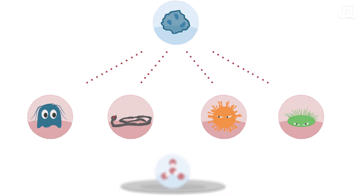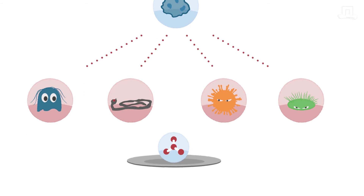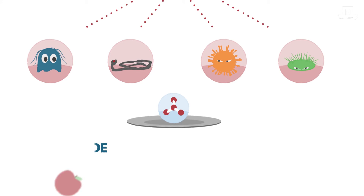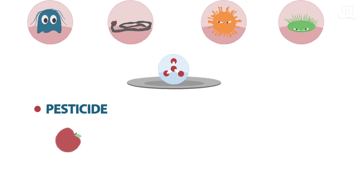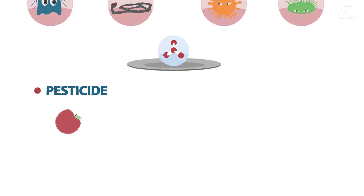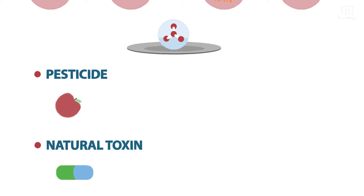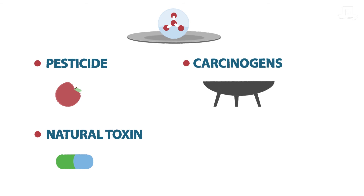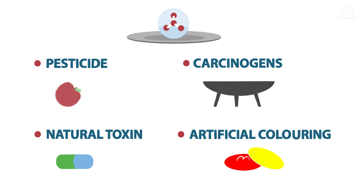A chemical hazard in food can be a pesticide that is present on your apple, a natural toxin present in a food supplement, a cancer-inducing chemical formed when preparing your food on the barbecue, or an artificial colour in the sweets of your children.